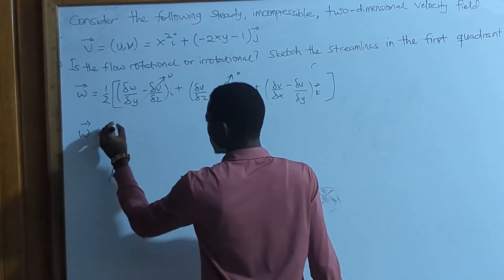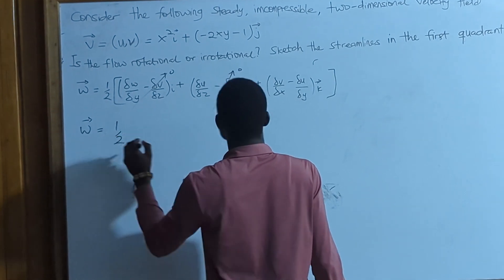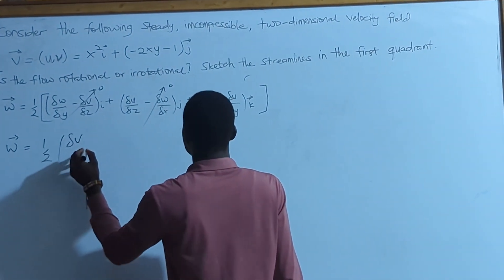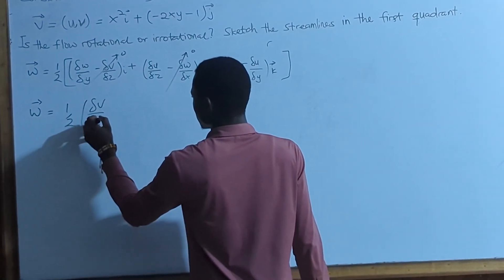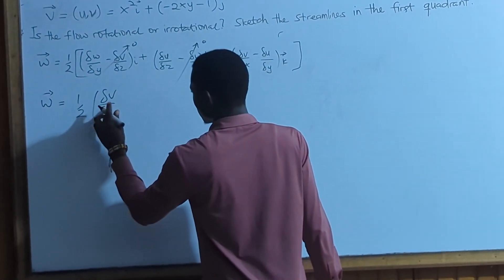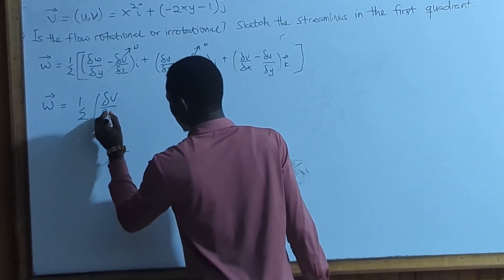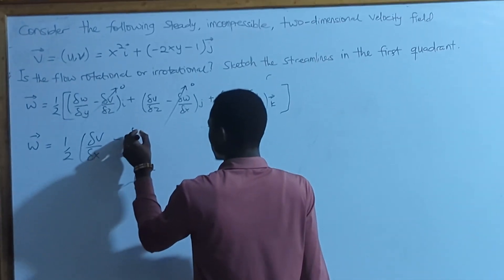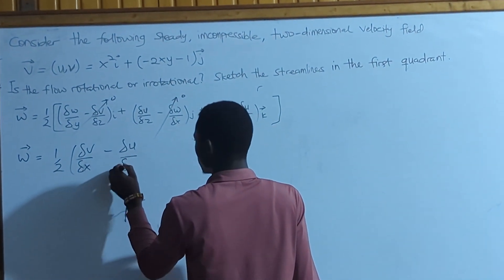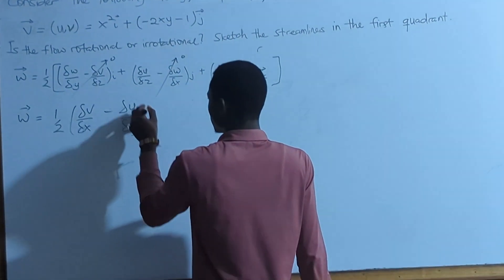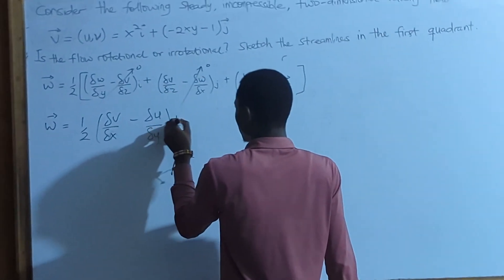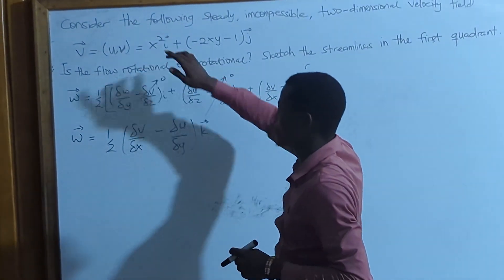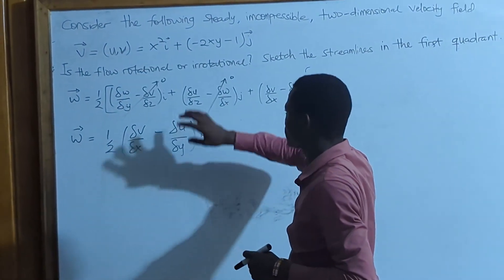So the formula reduces to one half times the partial differential of v with respect to x, minus the partial differential of u with respect to y, in the k direction. We are going to use this formula to find our variables.